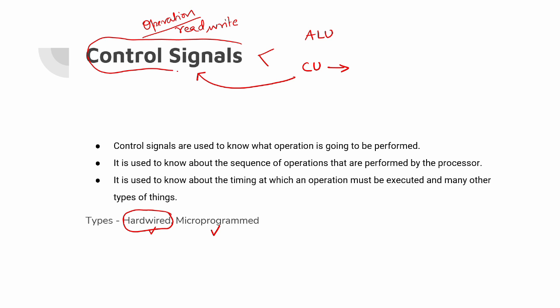How do we generate control signals? There are two different options. The first option is hardwired. The second option is microprogram.